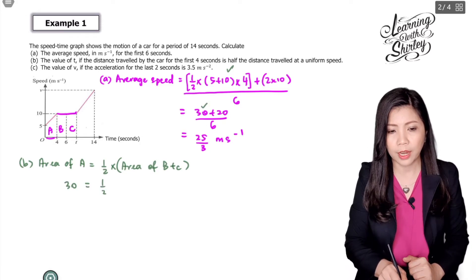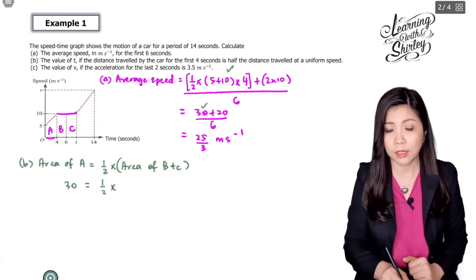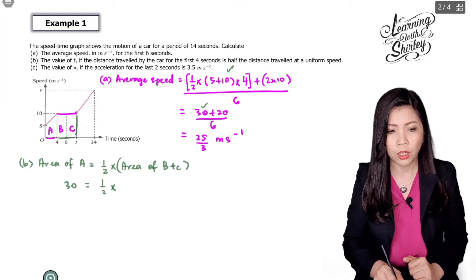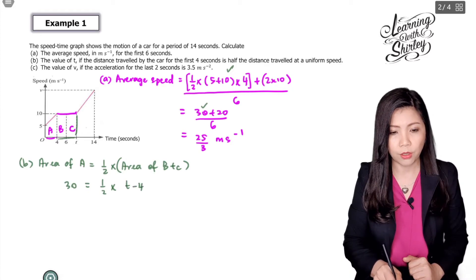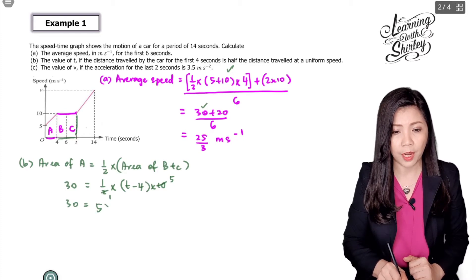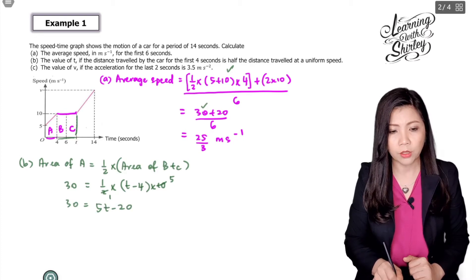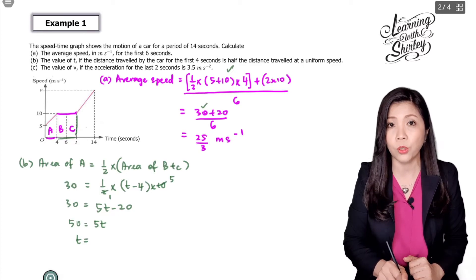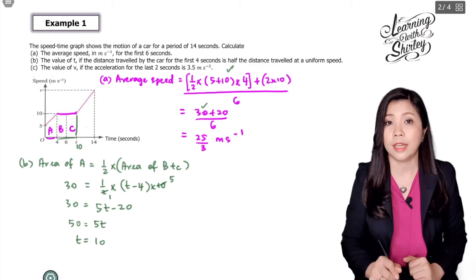So 30 equals half times (T minus 4) times 10. We can simplify to get 30 equals 5T minus 20. Shifting negative 20 to the left-hand side gives 50 equals 5T. Therefore T equals 10. 50 divided by 5 is 10, so T equals 10.